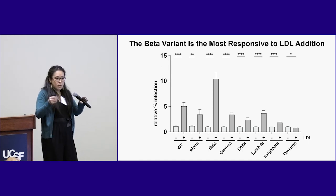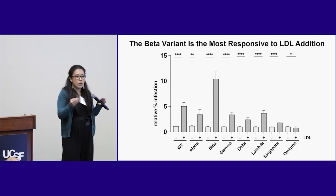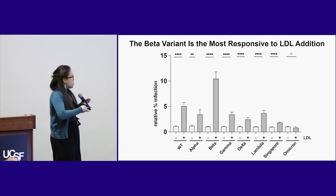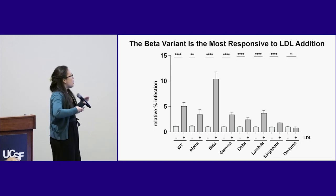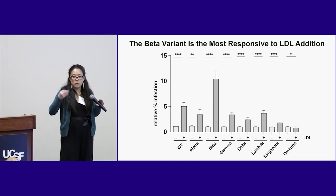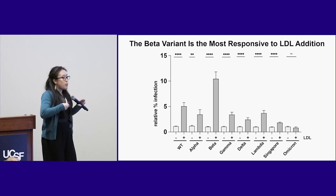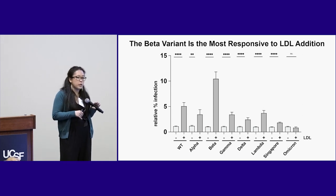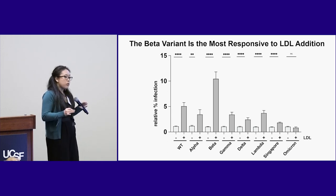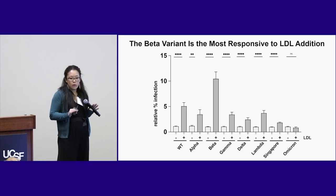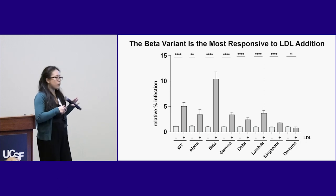We then looked to see how other variants respond to this LDL — do they have the same response or not? It turns out each responds slightly differently. Omicron on the far right has the least response. Uniquely, the beta variant had a very strong response to LDL. The beta variant is also one of the most pathogenic variants seen in patients, so we're going to keep it in mind for the rest of the talk.